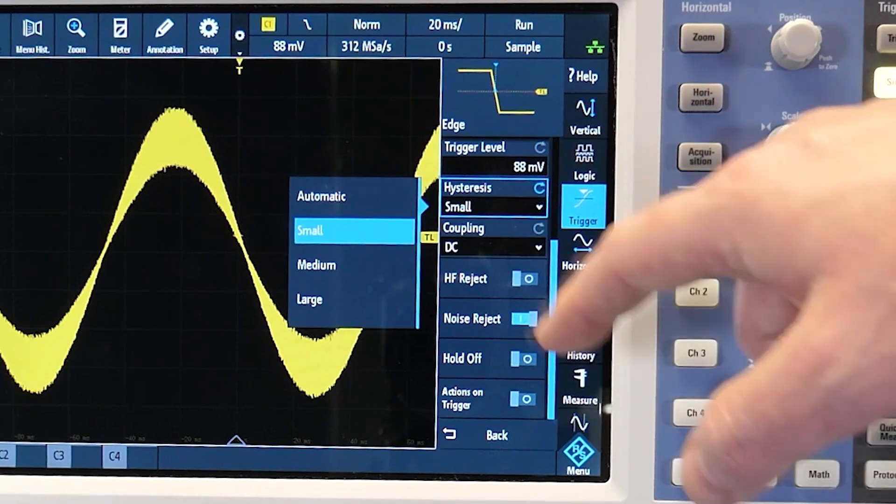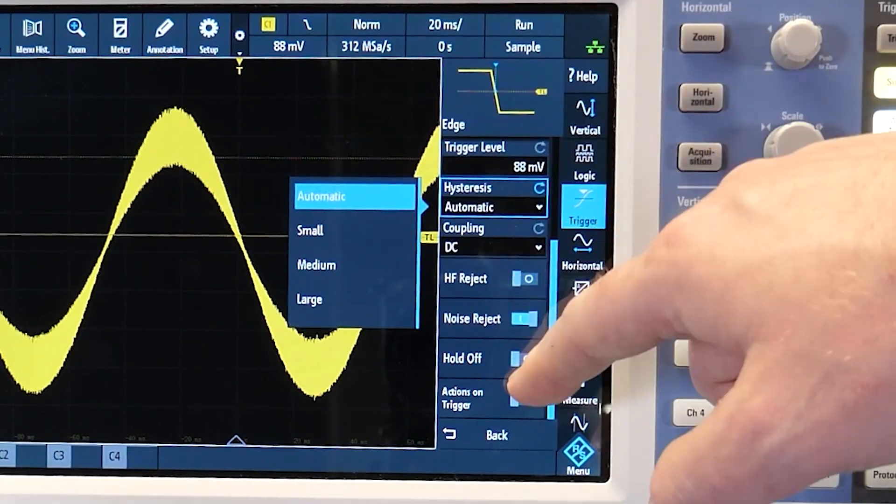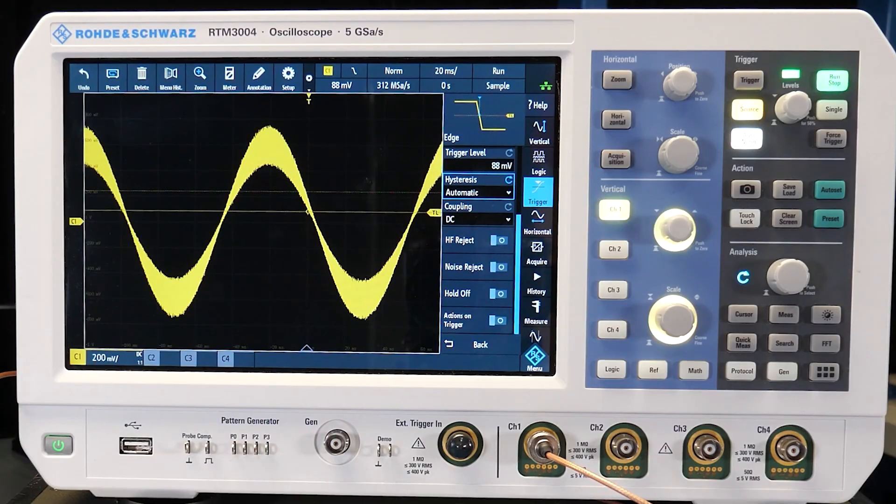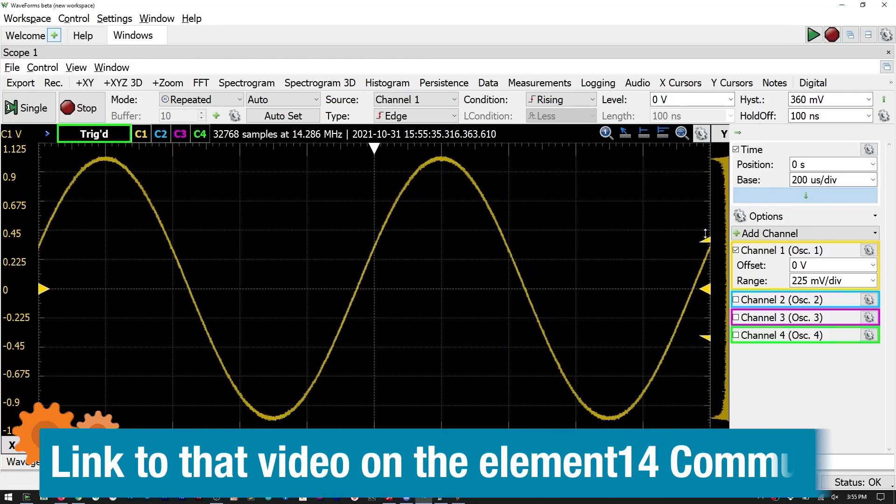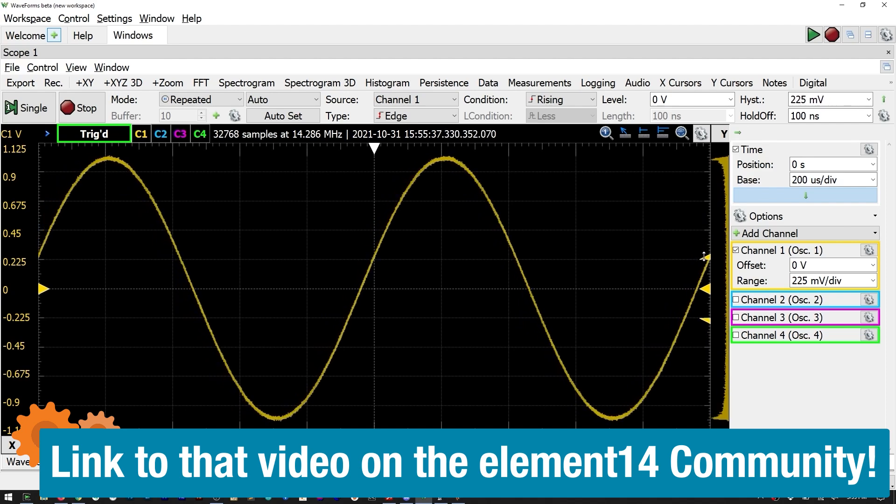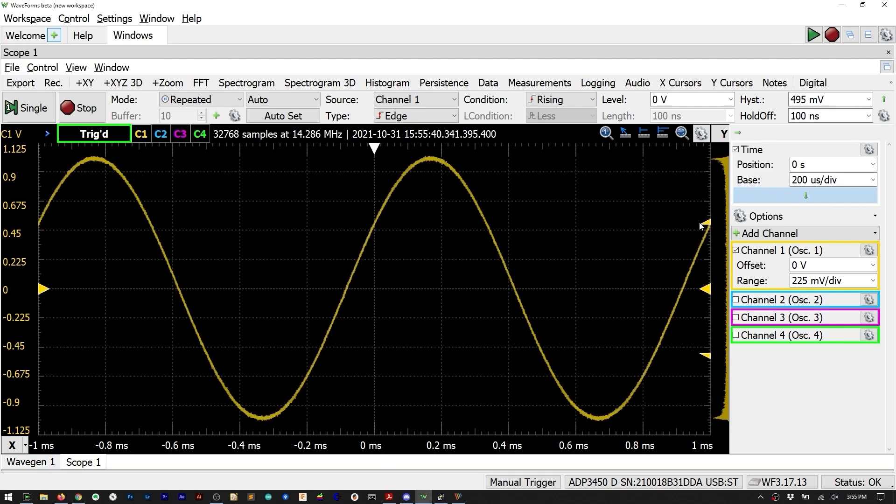Some scopes also have adjustable hysteresis which qualifies the signal's edge. It's like adding a Schmidt trigger to the trigger. By the way, when I did a hands-on review of the Analog Discovery Pro, I specifically mentioned its adjustable hysteresis and how I liked the way it looked on screen. In general, you won't need to really mess with the noise filters or hysteresis all that often. But if you're looking at a noisy signal, you might have to play around with a combination of those settings to get a stable trigger.